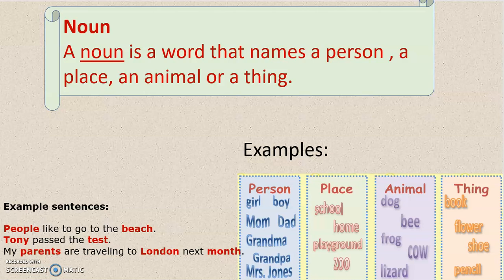People like to go to the beach. Here, people and beach, they are the nouns. Tony passed the test. Now, Tony and test, they are taken as nouns.